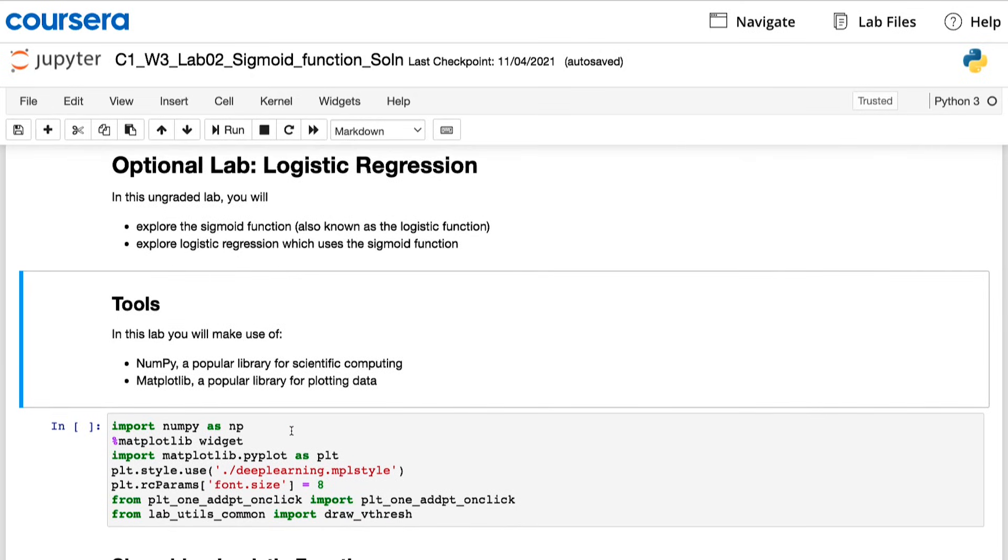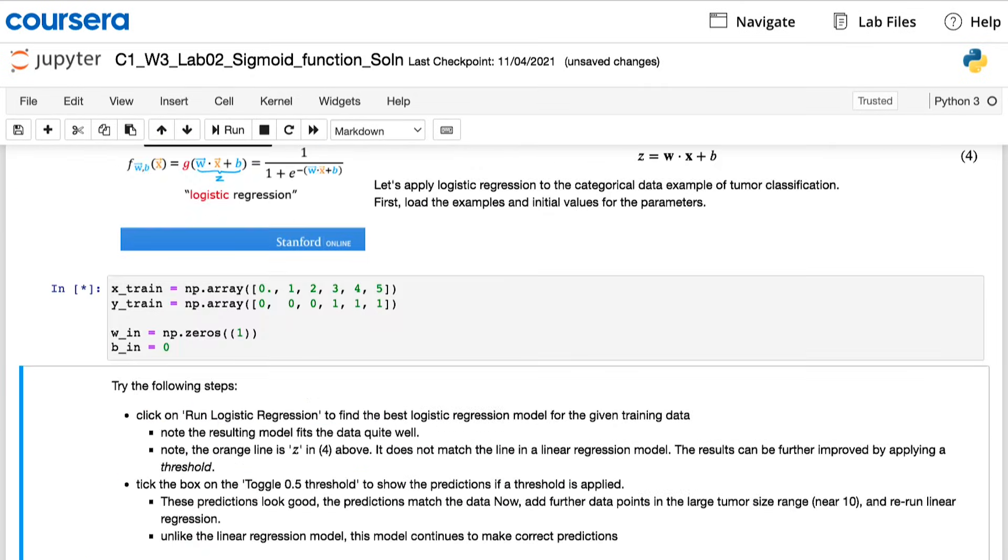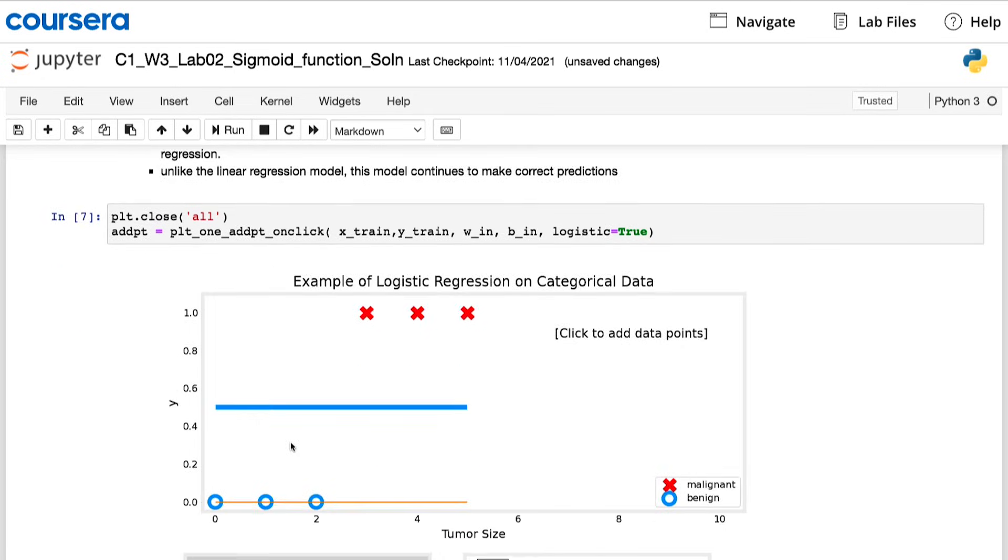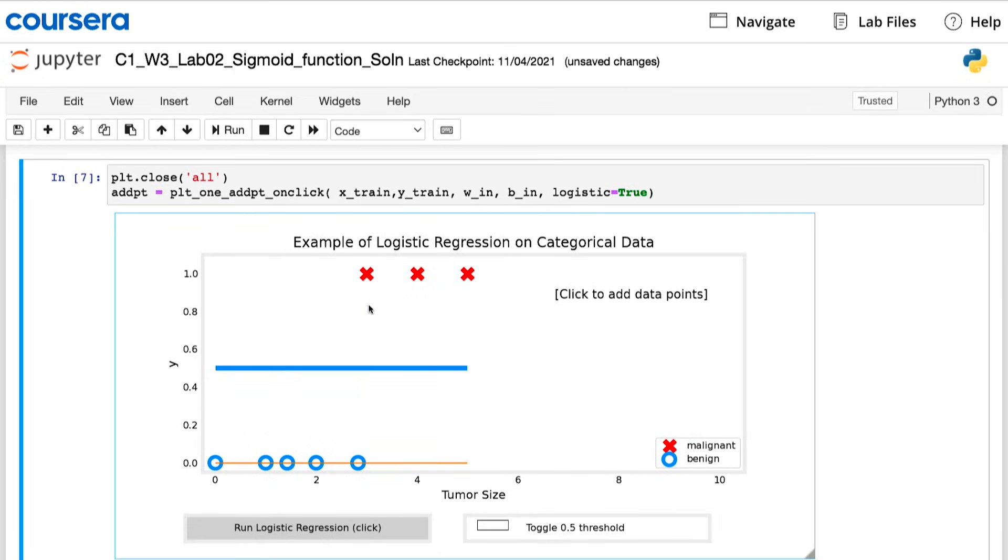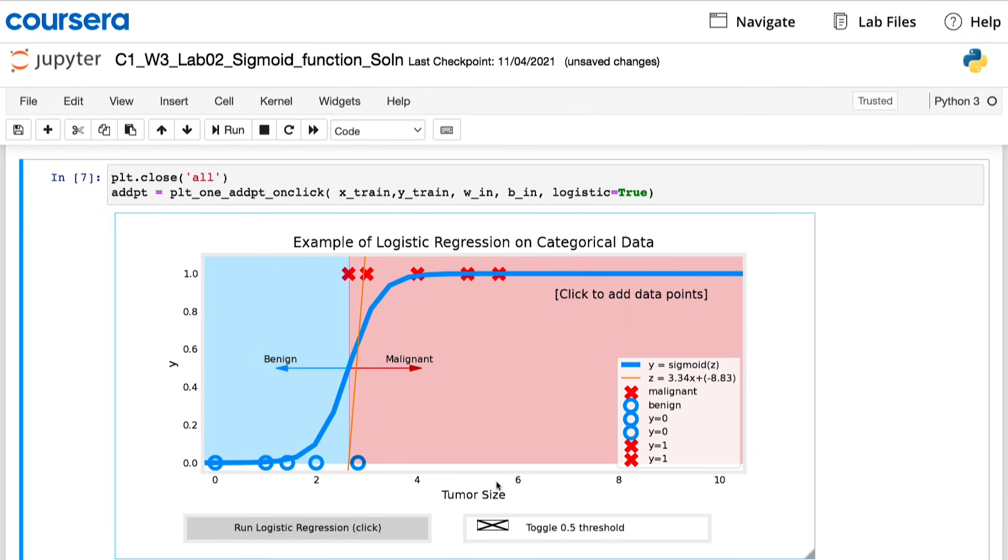In the optional lab that follows this video, you also get to see how the sigmoid function is implemented in code. You can see a plot that uses the sigmoid function so as to do better on the classification tasks that you saw in the previous optional lab. Remember that the code will be provided to you, so you just have to run it. I hope you take a look and get familiar with the code.